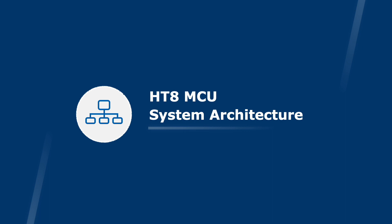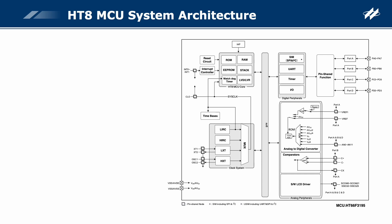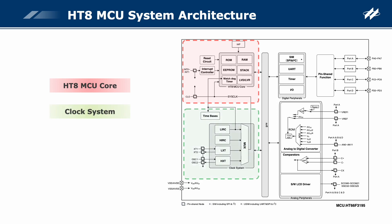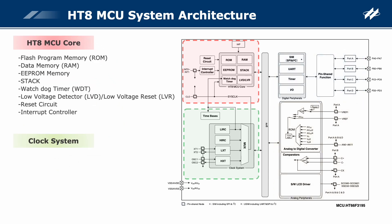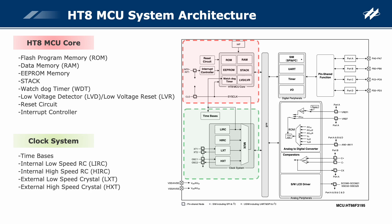HT8 MCU system architecture. The HT8 MCU system architecture is mainly divided into four parts: HT8 MCU core, clock system, digital peripherals, and analog peripherals. The HT8 MCU core is the core component of the MCU, including flash program memory, data memory, EEPROM memory, stack, watchdog timer, low voltage detector, low voltage reset, reset circuit, and interrupt controller.